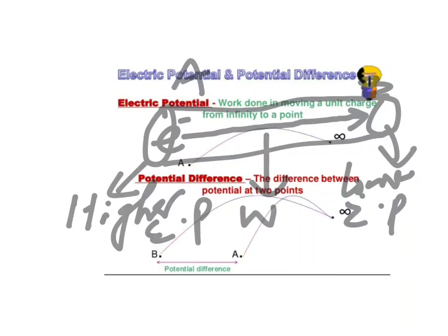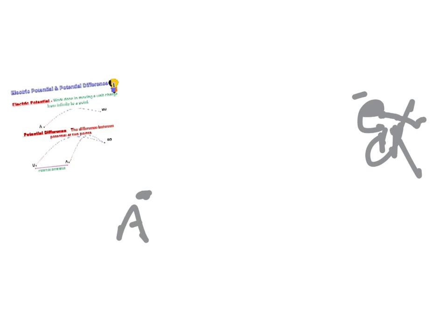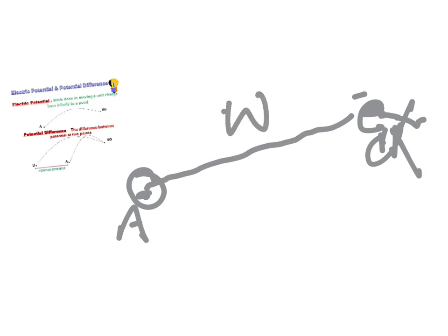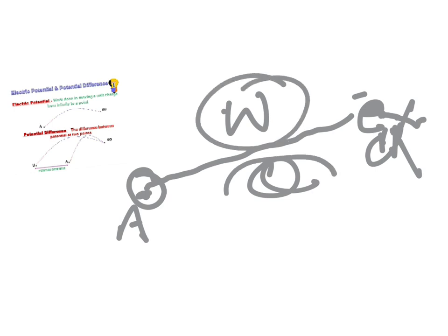Suppose the charge is located at infinity and we have to move it to point A. This will involve some work. If W is the work and Q is the charge moved from infinity to point A, then the work done to move this charge from infinity to point A is called the electric potential at A.